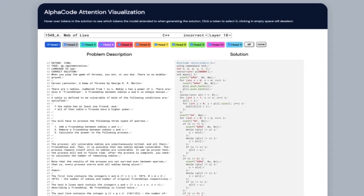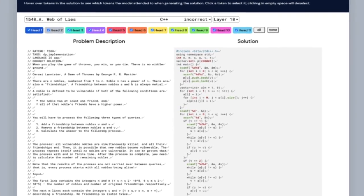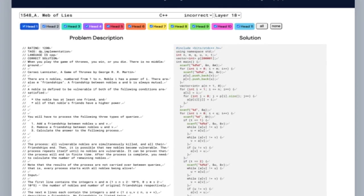Overall, AlphaCode placed at approximately the level of the median competitor. Although far from winning competitions, this result represents a substantial leap in AI problem-solving capabilities, and these results will inspire the competitive programming community.